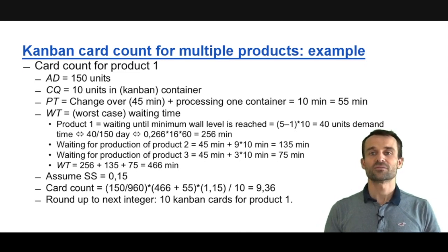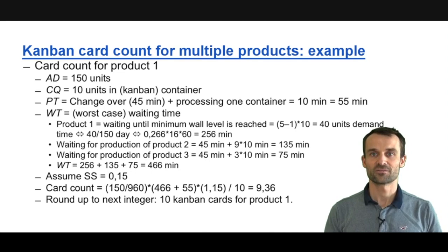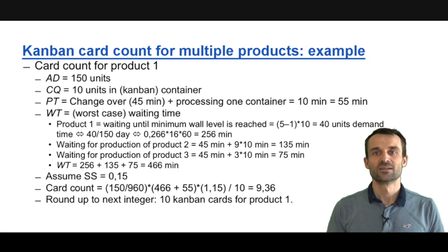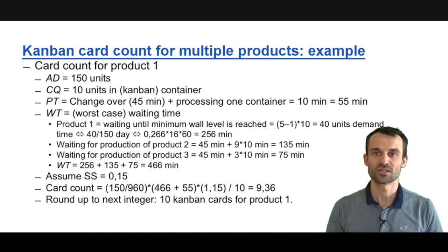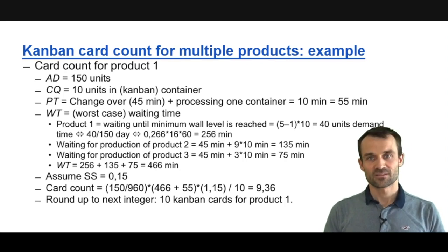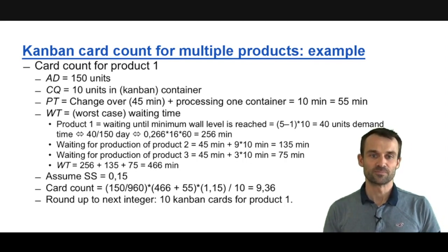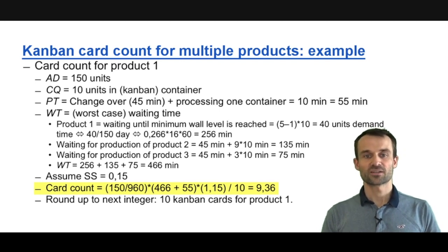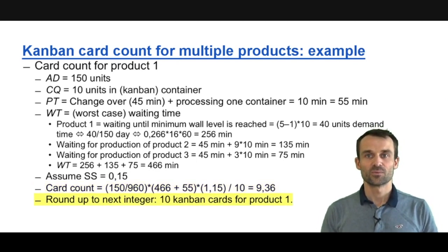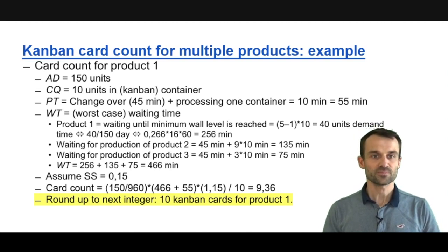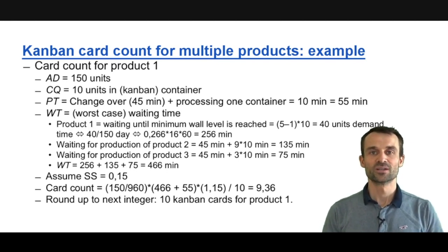Now we have all the numbers we need. We have the average daily demand rate divided by container quantity giving us the flow rate, and the sum of waiting time and processing time giving us the flow time. The product of those two gives the number of Kanban cards, which we then inflate by a safety factor and round up. Using a safety factor of 0.15, we get 9.36, which rounds up to 10 Kanban cards for product one. Calculating the card counts for products two and three is left as an exercise.